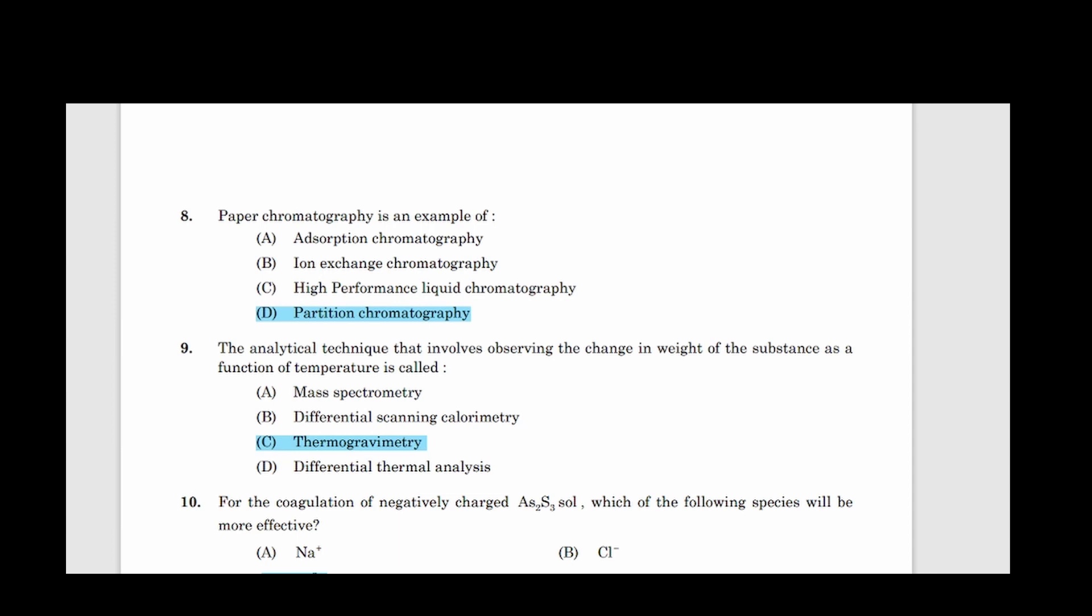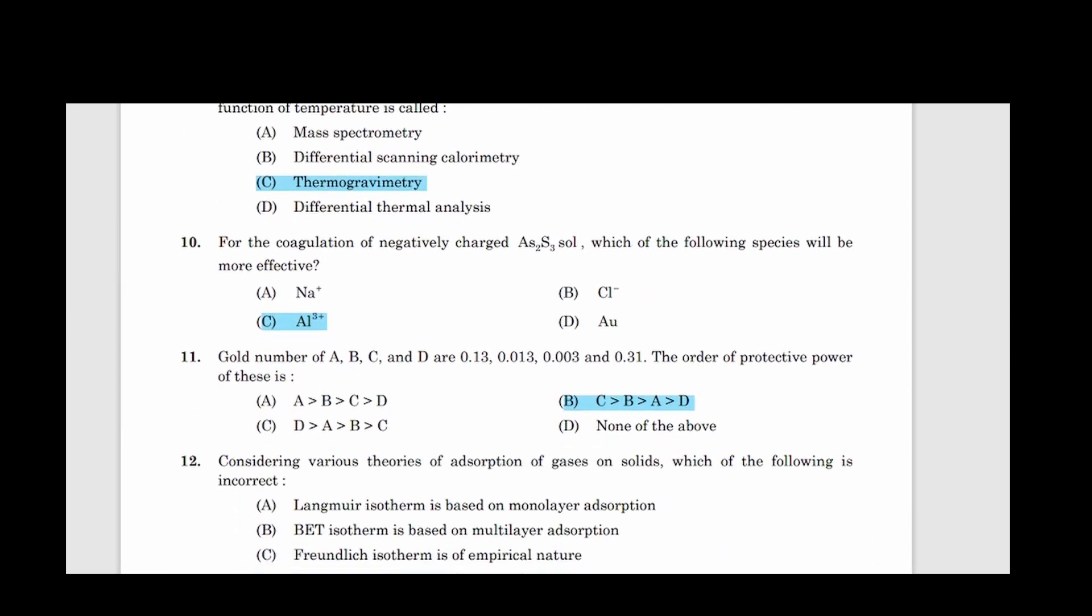Eighth question: Paper chromatography is an example of. Correct answer option D, Partition chromatography. Ninth question: The analytical technique that involves observing the change in weight of the substance as a function of temperature is called. Correct answer option C, Thermogravimetry. Tenth question: For the coagulation of negatively charged As2S3 solution, which of the following species will be more effective? Correct answer option C, Aluminium 3+.